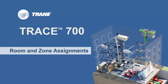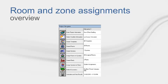Hi, my name is Kevin Sims and I'm a marketing engineer in the CDS group at Trane. Today I'm going to be talking about room and zone assignments in the Assign Rooms to System section in TRACE 700. In TRACE 700, the Assign Rooms to System section of the program is used to configure the rooms and zones on the air side systems.